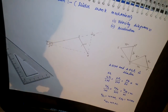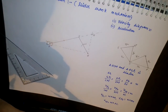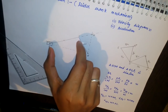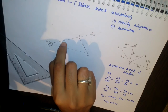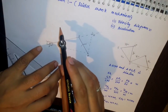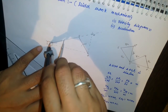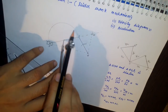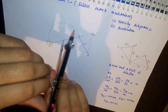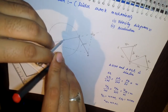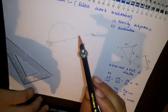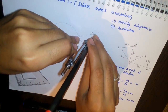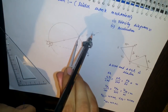Now let us come to the acceleration diagram. For the acceleration diagram we have to construct two circles. First, take PC as a diameter and draw a circle from the midpoint of PC — suppose S is the midpoint, we draw a circle with radius SP. Second, take C as a center and CM as a radius, and draw another circle.